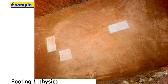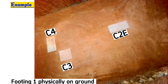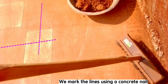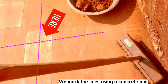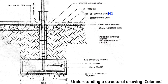Even physically on the ground, this is the same footing one with column C2E, column C3, and column C4. We mark these columns with lime mixed with water, marking the lines using a concrete nail. We place these columns exactly in these markings according to the drawing.